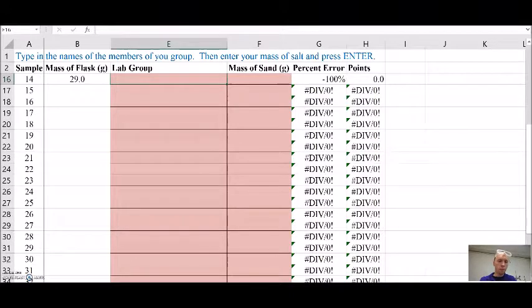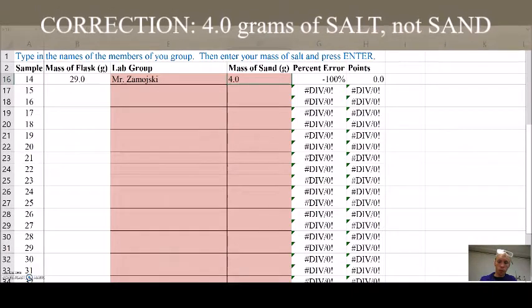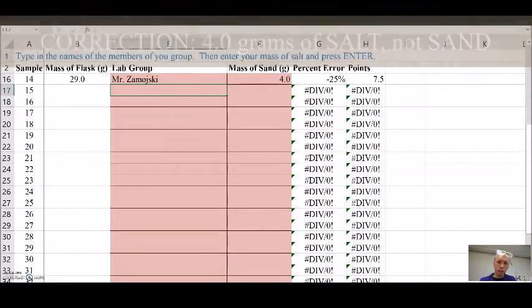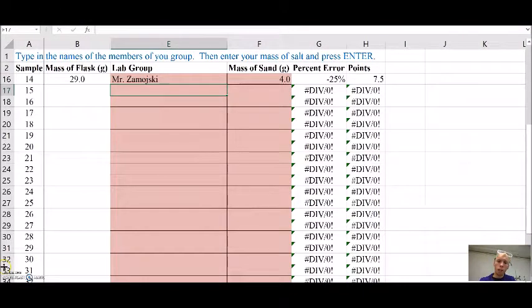All right, I've taken another attempt at this. So I have a different sample here. I'm going to put in my name again. And this time I got 4.0 grams of sand. So here we go. Big moment. All right, better. Not as terrible as before, but still needs some work. So I'm going to take a couple more tries at this and see how I do.